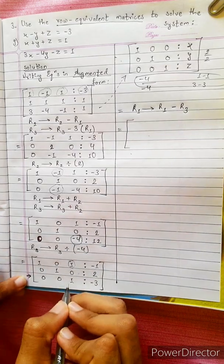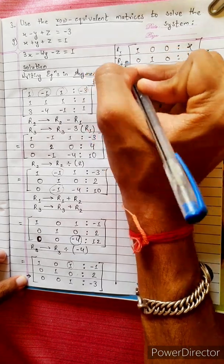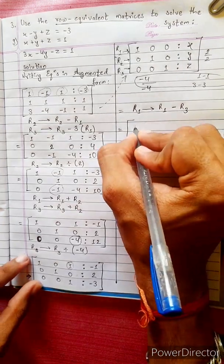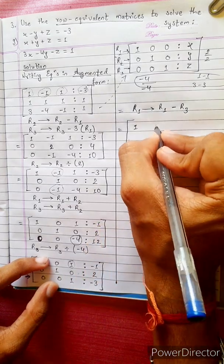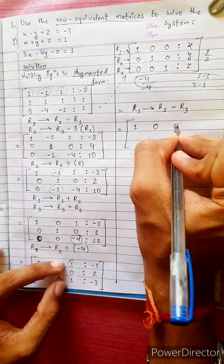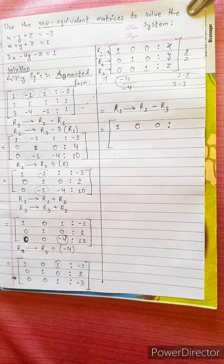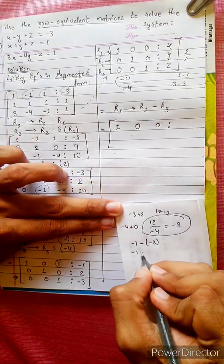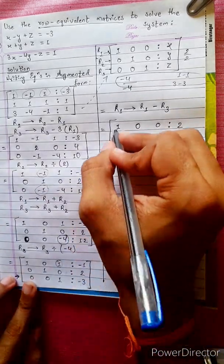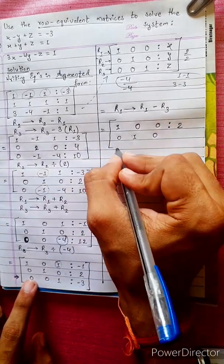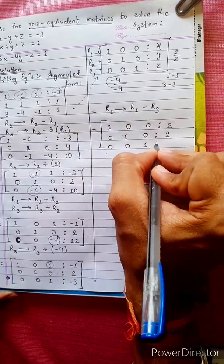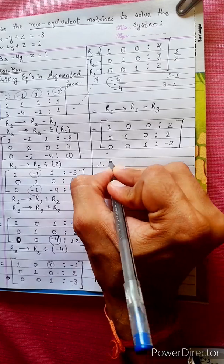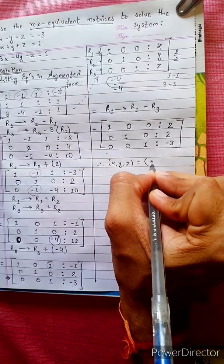R3 will change — R3 is the third row. R1, R2, R3. R3: 1 minus 1 equals 0; this is 2; minus 1 minus (minus 3) equals minus 1 plus 3 equals 2. The matrix now reads: 0, 1, 0; 0, 0, 1. So 1 equals 2; 2 equals 2; minus 3. Compare: 0, 0, 0; 0, 0, 0. So x, y, z. Therefore x, y, z equals 2, 2, minus 3.